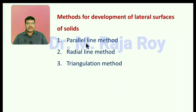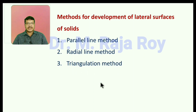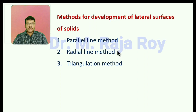To draw the developments we have three different methods. The first method is the parallel method, the second one is the radial method, and the third one is the triangulation method. The parallel method is applicable for prisms and cylinders. The radial method is applicable for cones and pyramids. The triangulation method is applicable for a special solid called a transition piece.